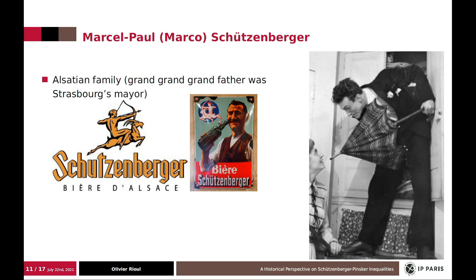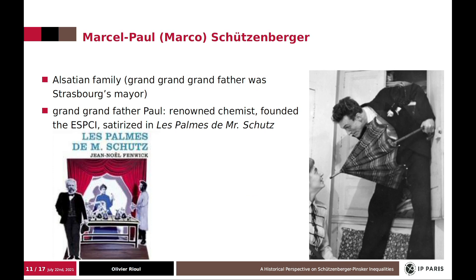So Marco Schützenberger was actually from an Alsatian family. His grand-grand-grand-grandfather was a mayor in Strasbourg. Strasbourg is my hometown. And he's well-known for a beer, well-known in Alsace, Schützenberger beer, which comes from the same family. Then his grand-grandfather is also well-known, Paul Schützenberger. He's a renowned chemist which worked with Pierre and Marie Curie. And he's well-known to be the character of Les Palmes de Monsieur Schützenberger, which was a theater play and a movie after that.